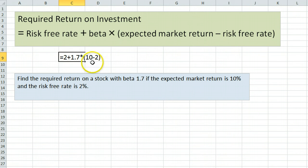remember the order of operations is going to require you to do the 10 minus 2 first, because it's in parentheses. You'll get 8. You then need to do the multiplication, 1.7 times 8, before adding 2. Excel will do it in the correct order, but if you're doing it by hand, please remember that.